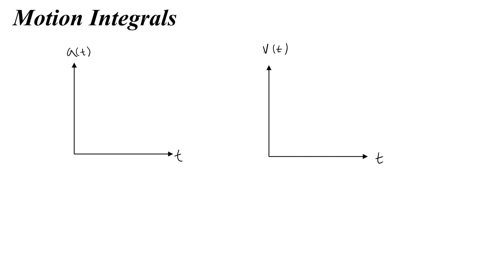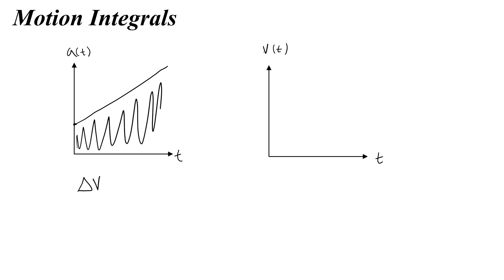In this video we're going to talk about definite integrals of acceleration and velocity. Draw for yourself an acceleration versus time graph and a velocity versus time graph, and on your acceleration versus time graph give yourself just a straight line. If I was to indefinitely integrate the acceleration equation, I would get the area under the entire graph, which tells me the change in velocity of the object, because the area of acceleration versus time graphs tells us change in velocity.